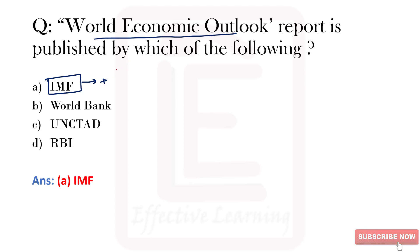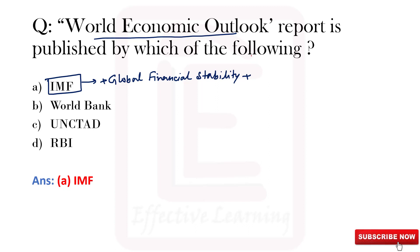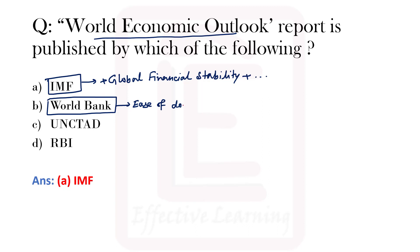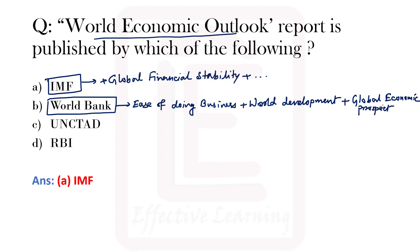The IMF also publishes the Global Financial Stability Report. The World Bank publishes the Ease of Doing Business Report, the World Development Report, and the Global Economic Prospects Report. These are important reports published by the World Bank.